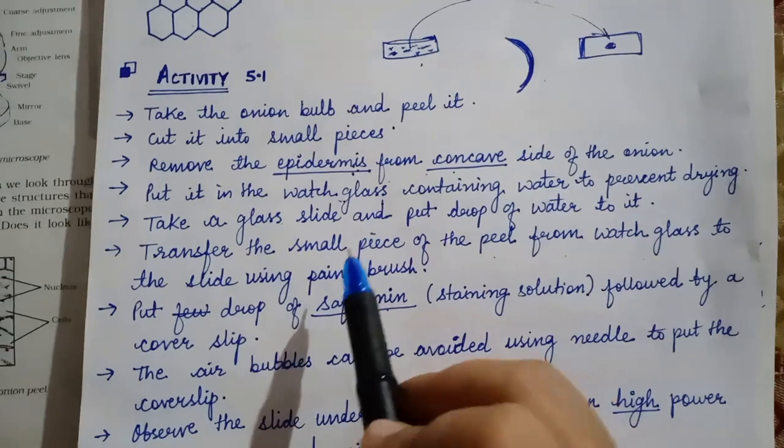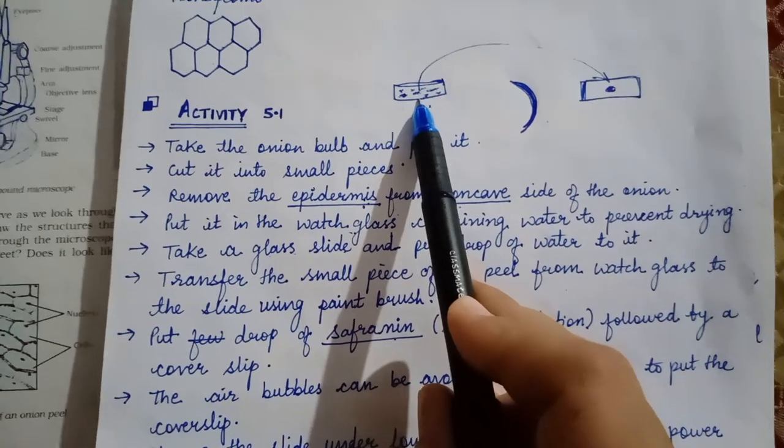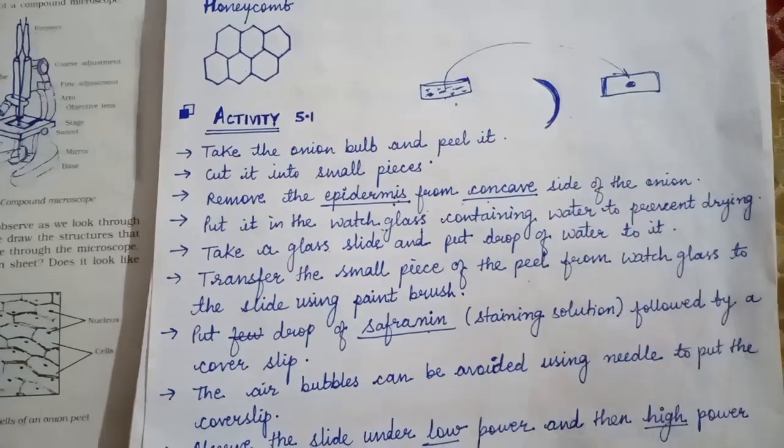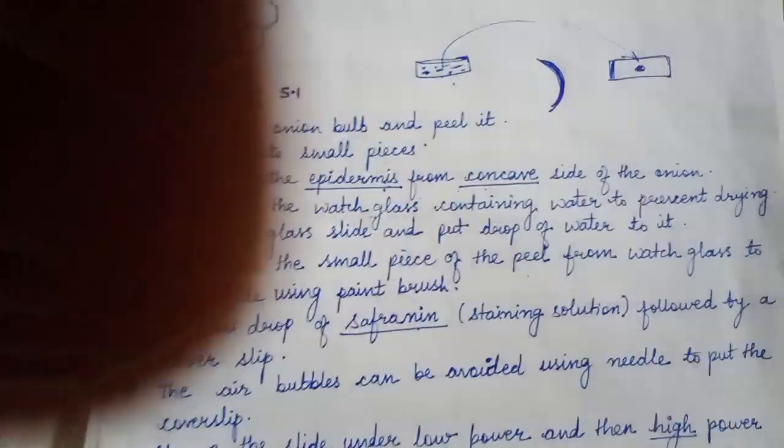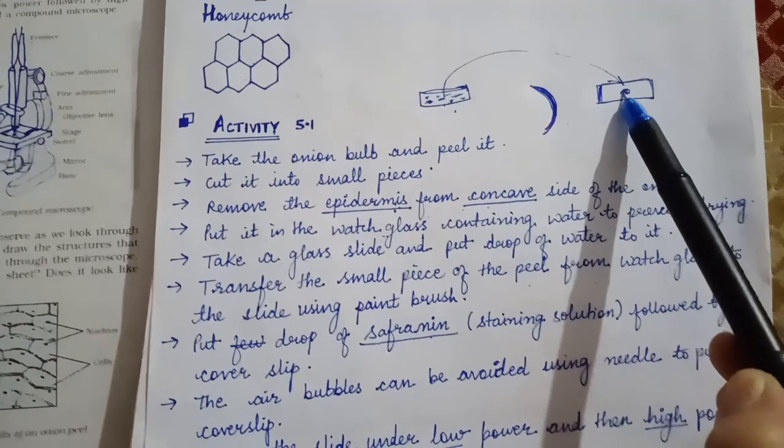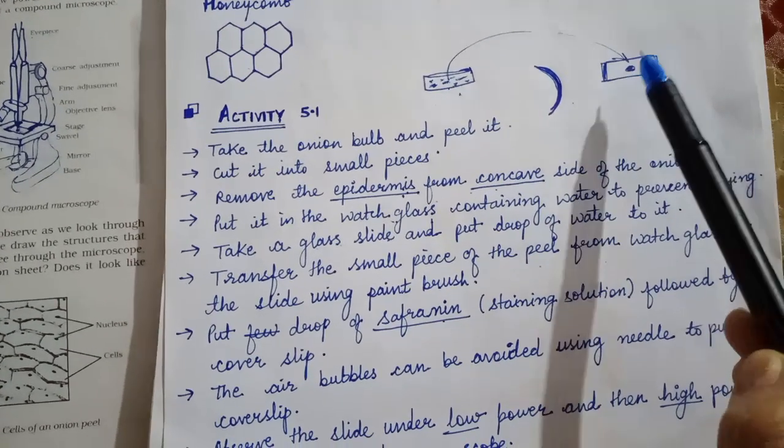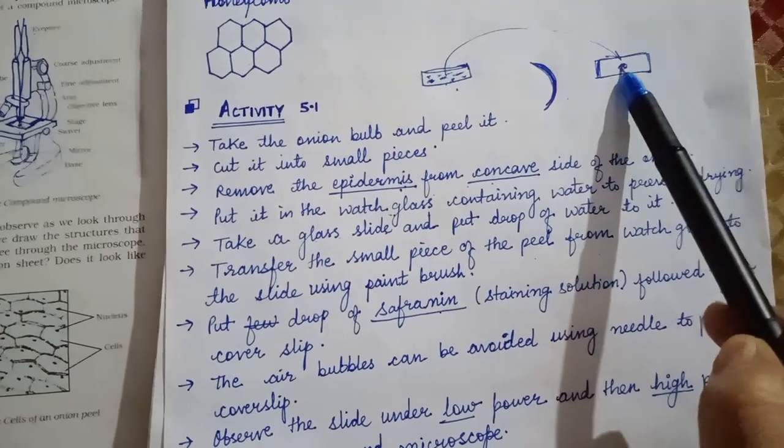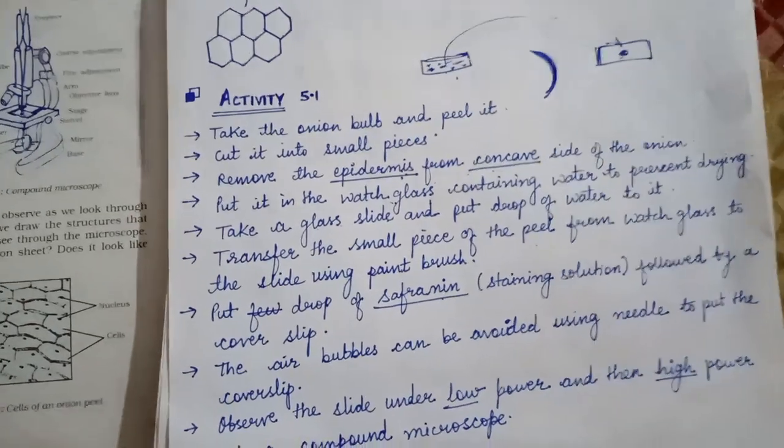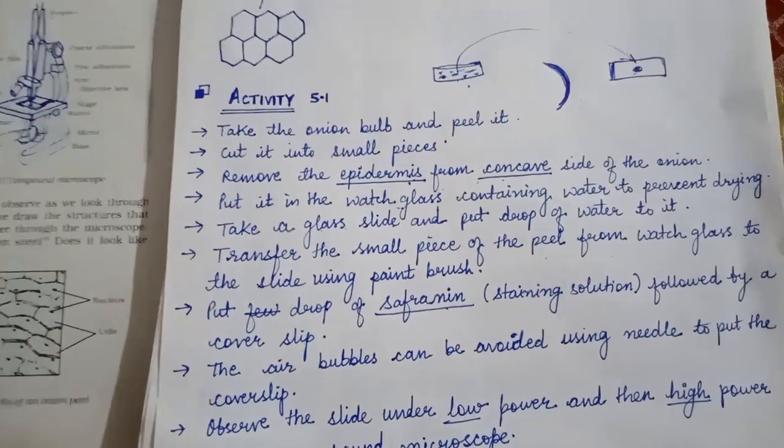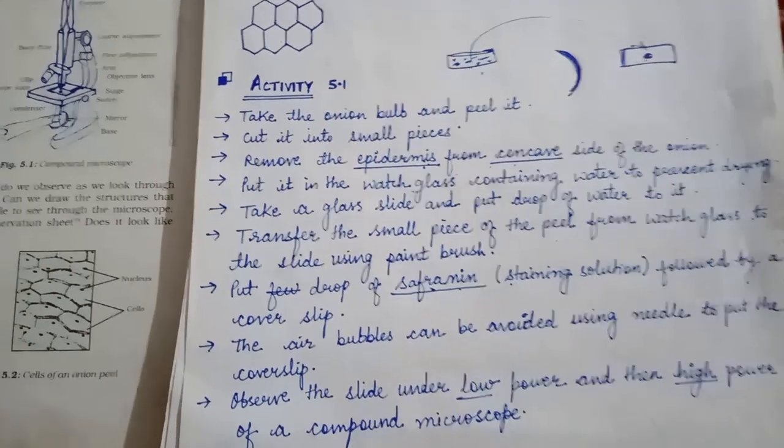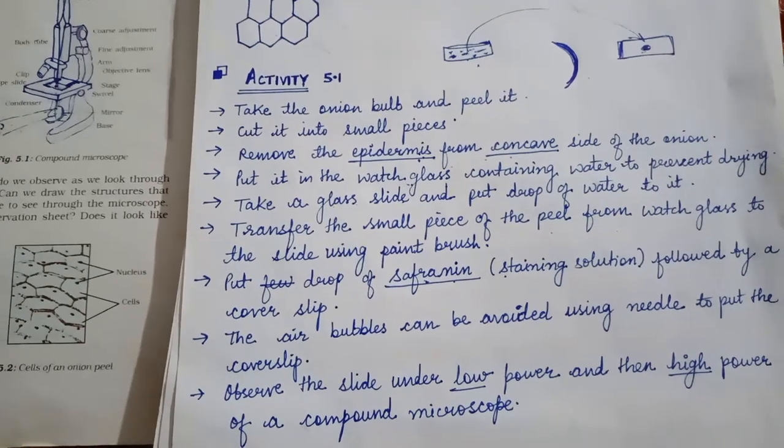Now take one piece of epidermis from the watch glass and transfer on the slide. This is, there is a glass slide. Us glass slide ke upar hume transfer kar denge. But before transferring, before transferring this epidermis, we will put few drops of water on this glass slide. Glass slide ke upar hume few drops water daalenge. Uske baad hume iske upar epidermis ka one piece rakhenge. Okay.